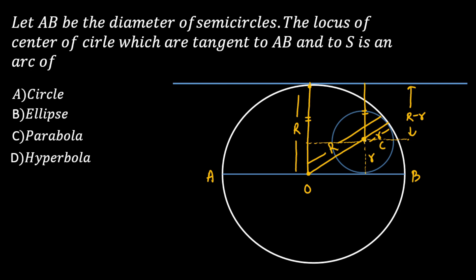The distance of center C from the tangent to the bigger circle is capital R minus r. And if you see this distance, this distance is also capital R minus r.